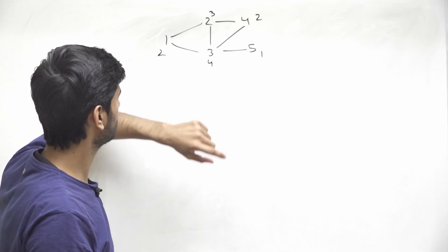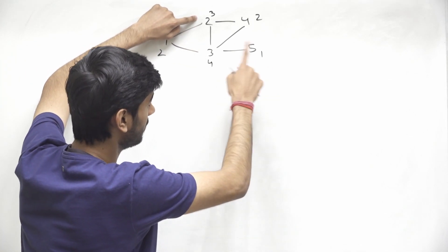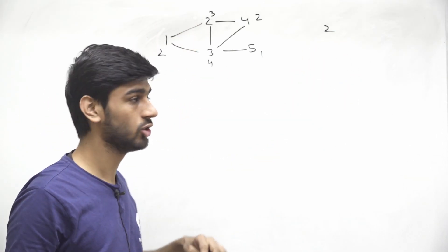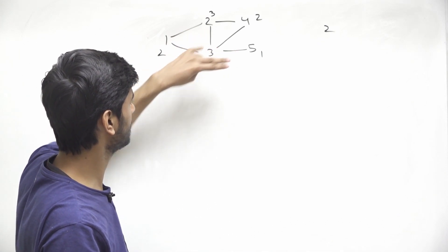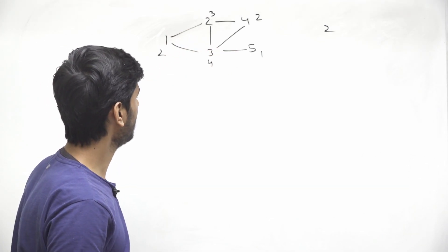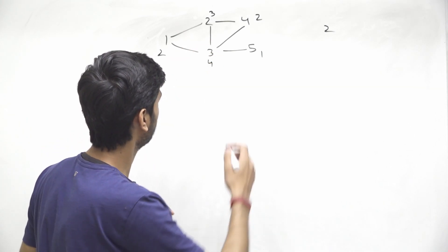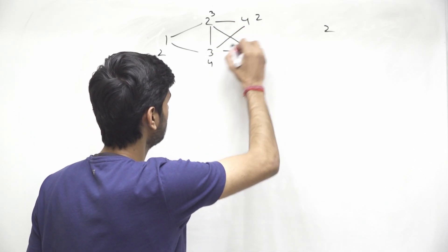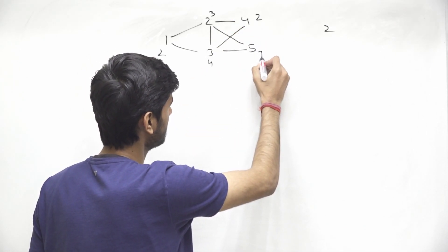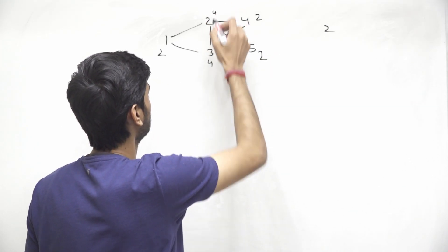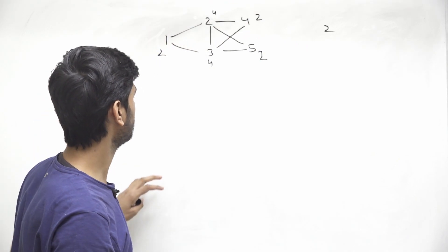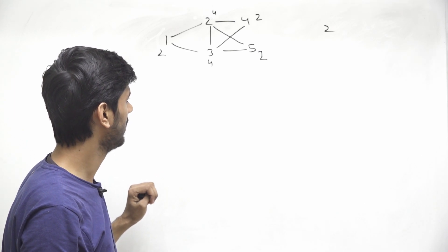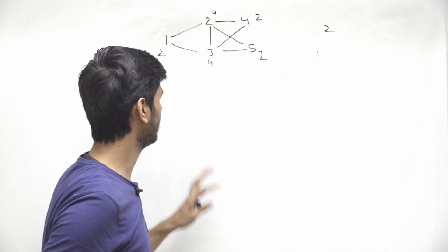Out of these 5 nodes, we have 2 nodes — nodes 2 and 5 — that have odd degree. We are allowed to add at most 2 edges to make sure these 2 nodes have even edges. We can add one edge between nodes 2 and 5, making node 5's degree 2 and node 2's degree 4. Now all nodes have even edges, so using one operation we were able to fix this, and we return true.